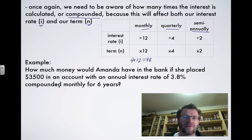So here's our example. It says, how much money would Amanda have in the bank if she placed $3,500 in an account with an annual interest rate of 3.8% compounded monthly for 6 years? So we'll use our new formula.